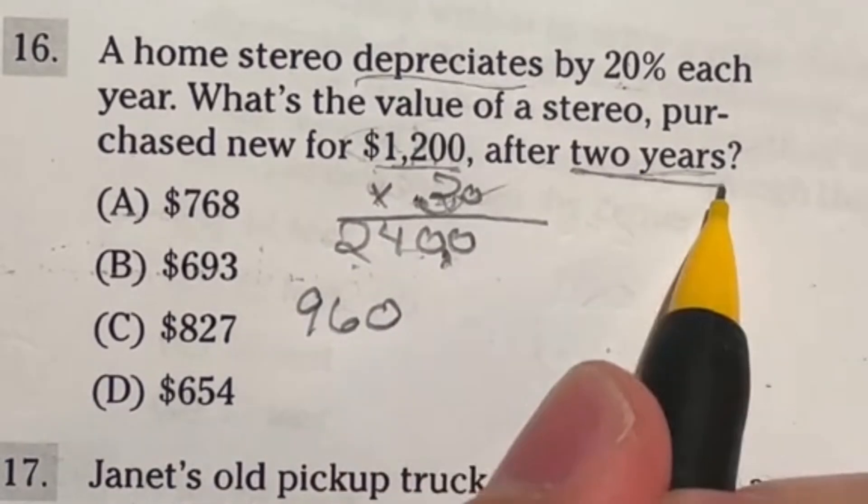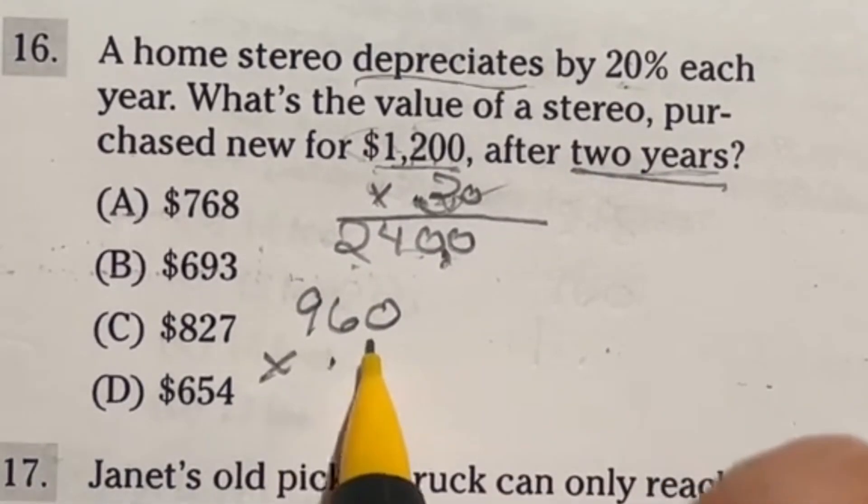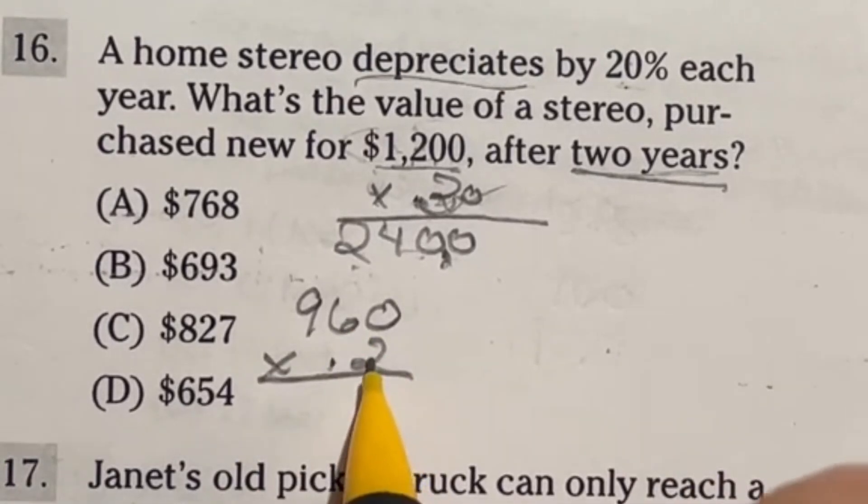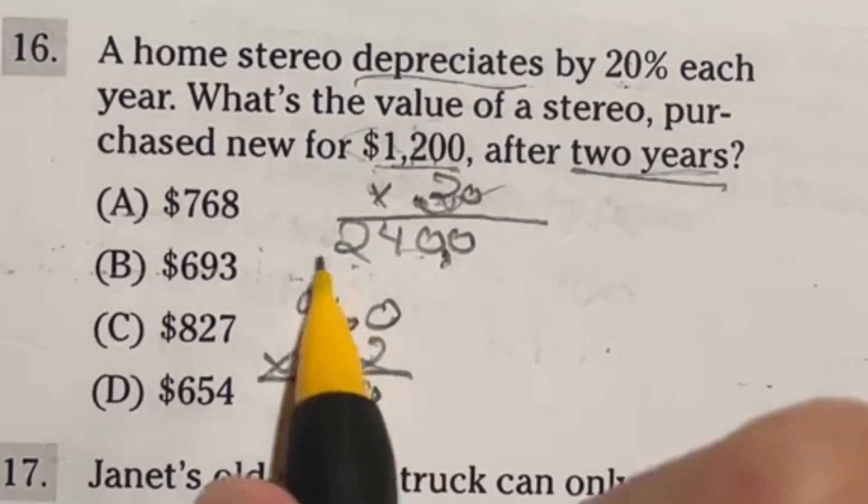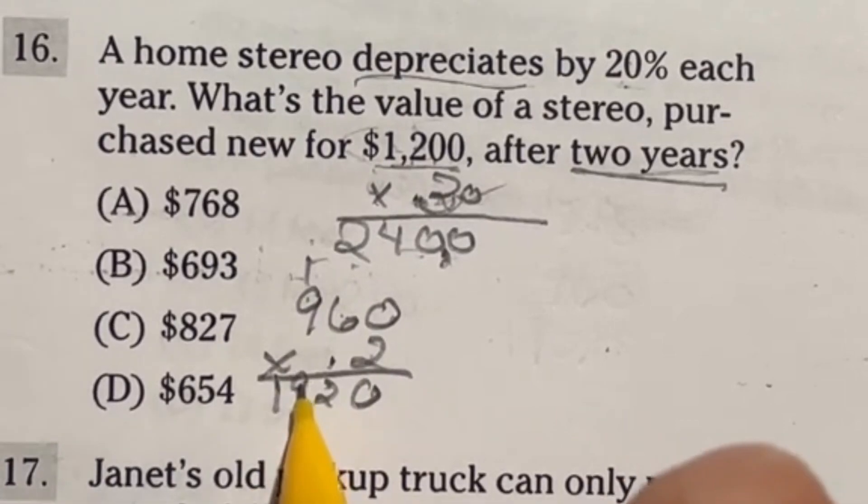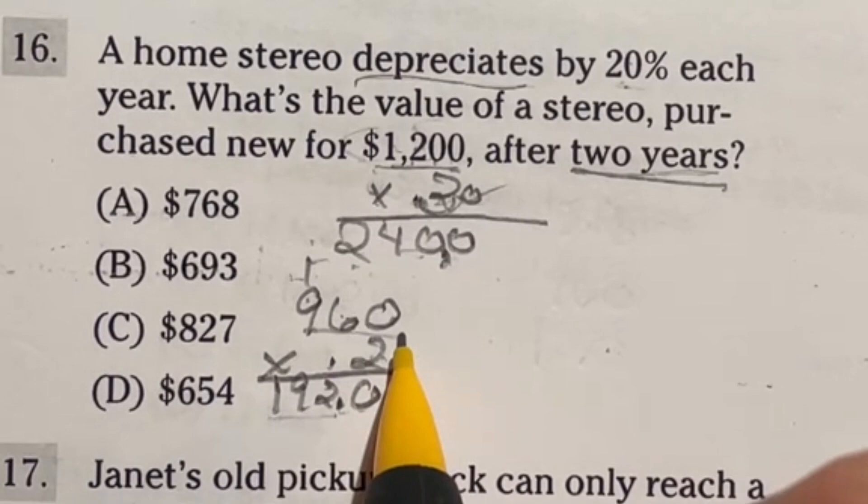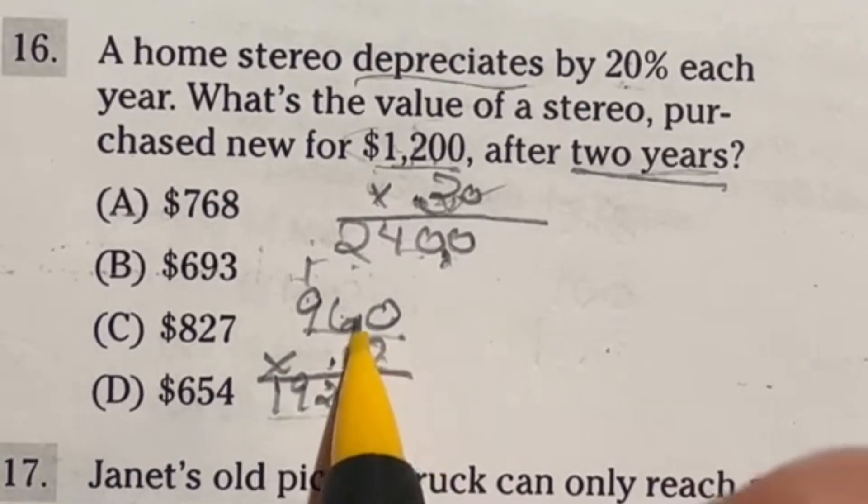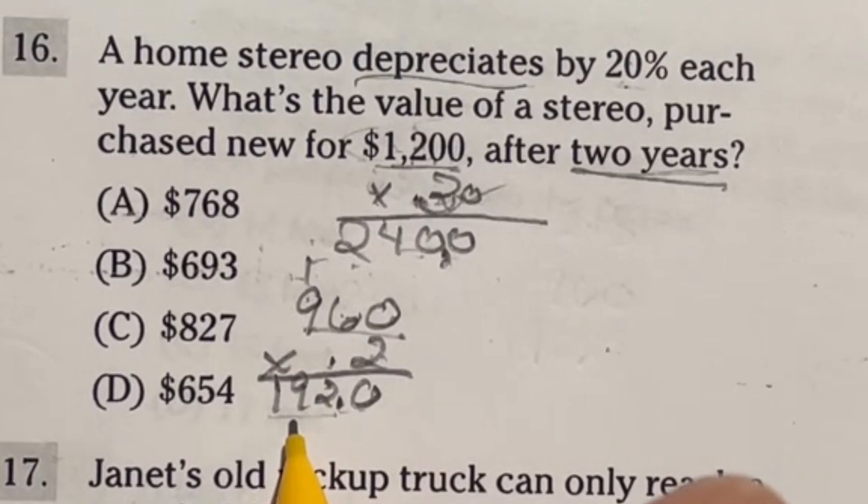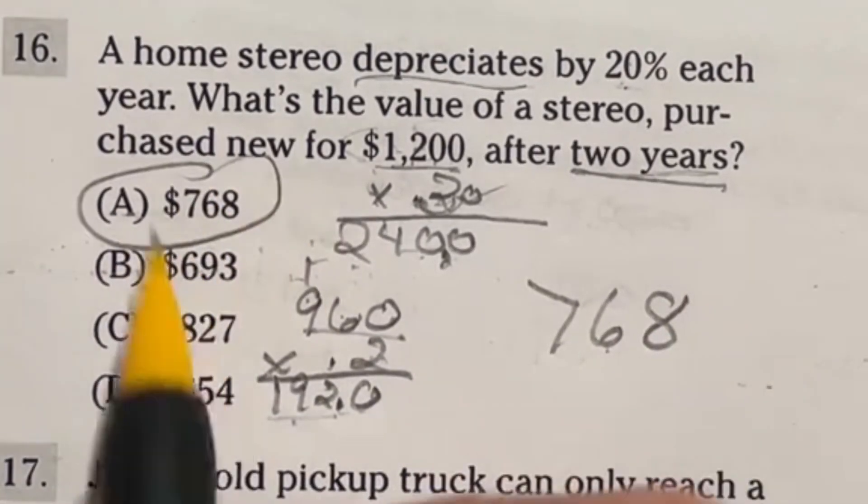Now that's our first step but we're doing this 2 times. So we have to multiply by that 0.2 again to find 20% of this guy. 2 times 0 is 0, 2 times 6 is 12 carry the 1, 2 times 9 is 18 plus 1 more is 19. Move that decimal place over 1 again. That's going to give me 192. Now I do 960 minus that 192 to get our final answer which is going to be 768. So our answer here is A.